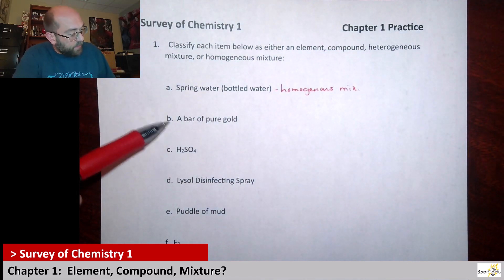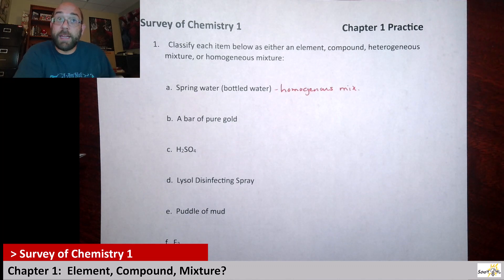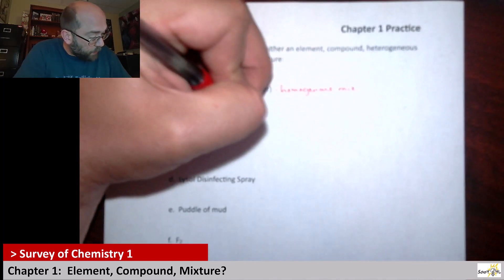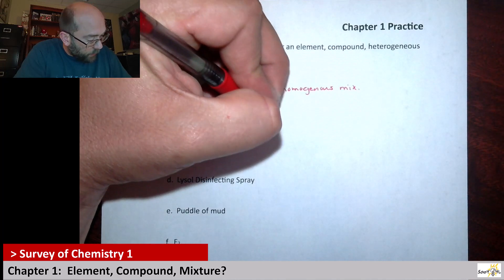Here it says we have a bar of pure gold, right? Gold is an element and it's pure gold. It's a bar of pure gold. So all it is is just gold. It's not a compound. It's not a mixture. So this is what we would call an element.